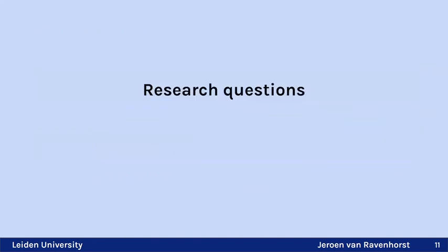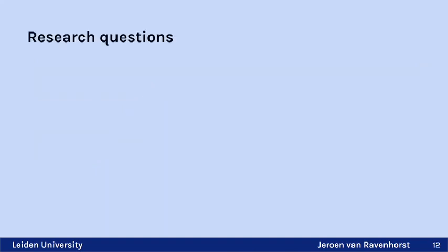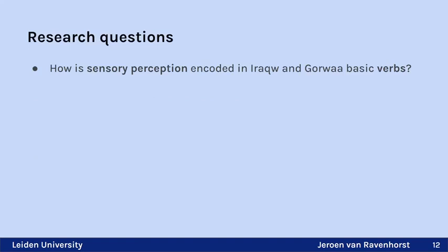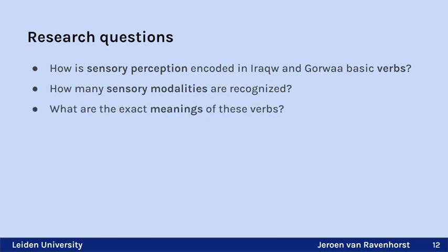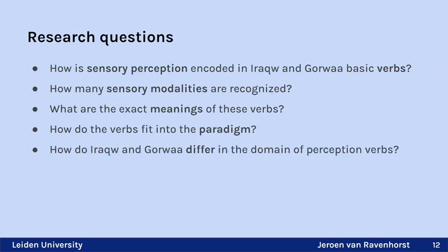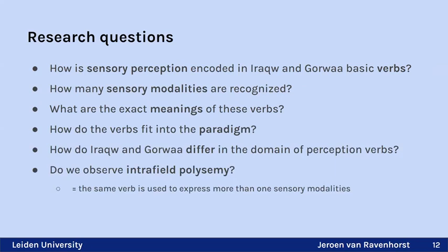Moving to Iraq and Gorwa, the research questions are: How is sensory perception encoded in their basic verbs? How many sensory modalities are recognized? What are the exact meanings of these verbs? How do the verbs fit into the paradigm? How do Iraq and Gorwa differ? And do we observe interfield polysemy — meaning is the same verb used across different sensory domains?